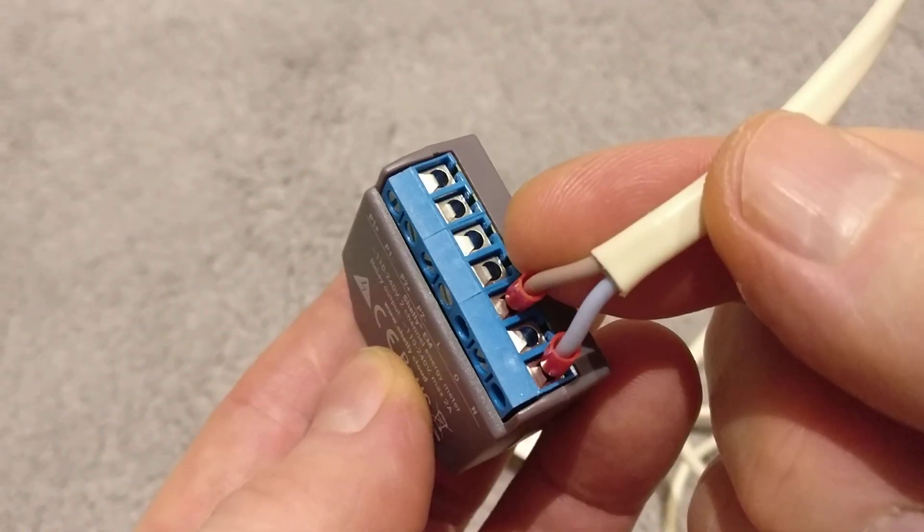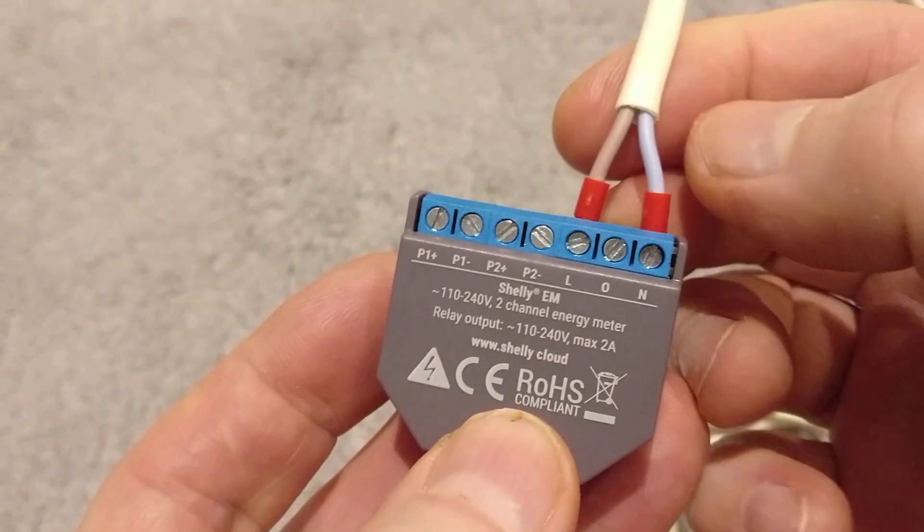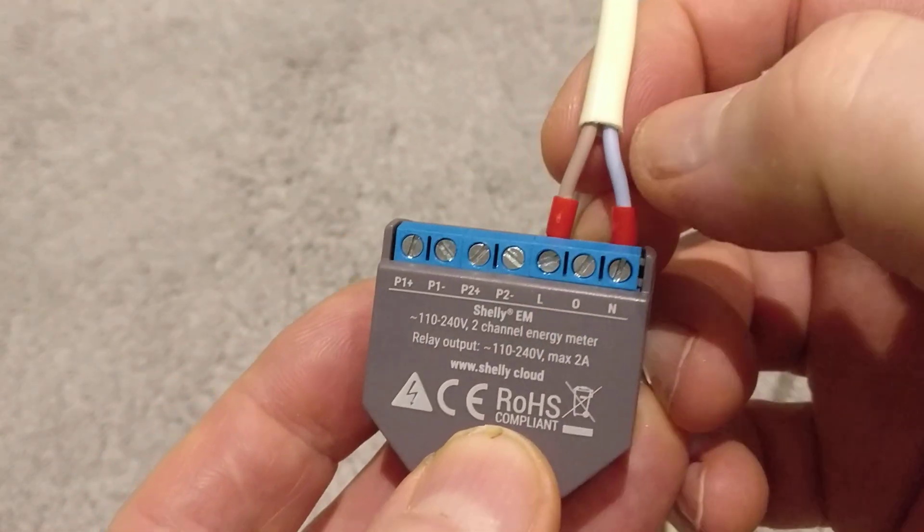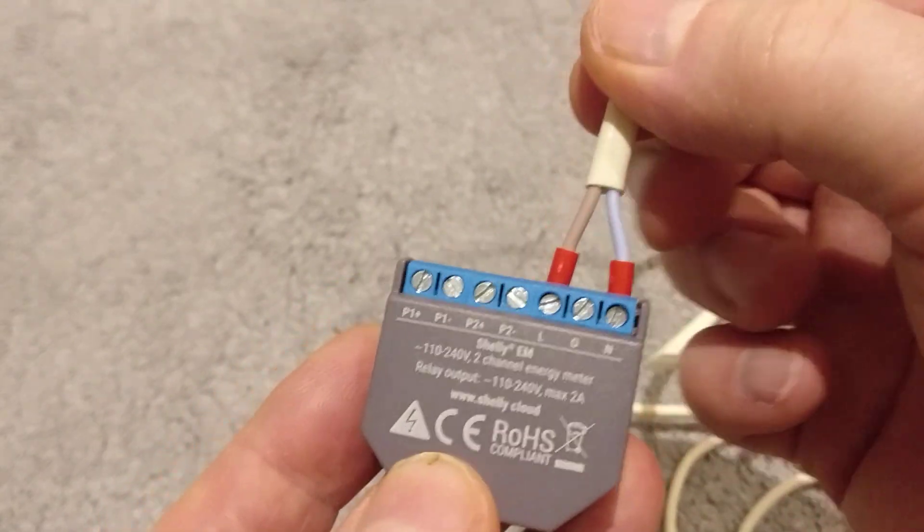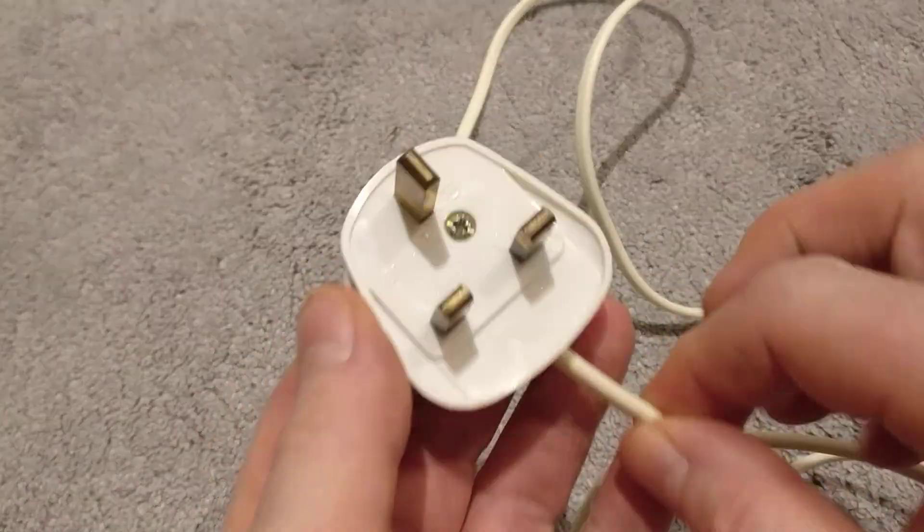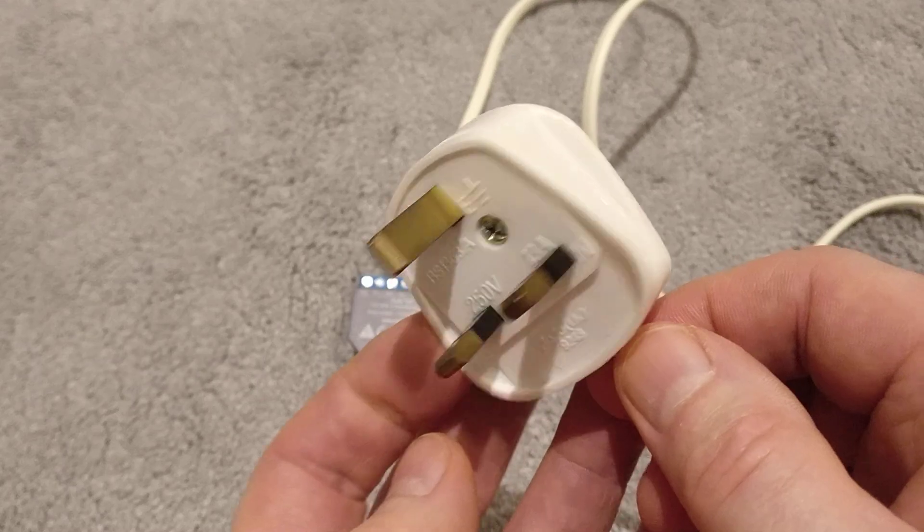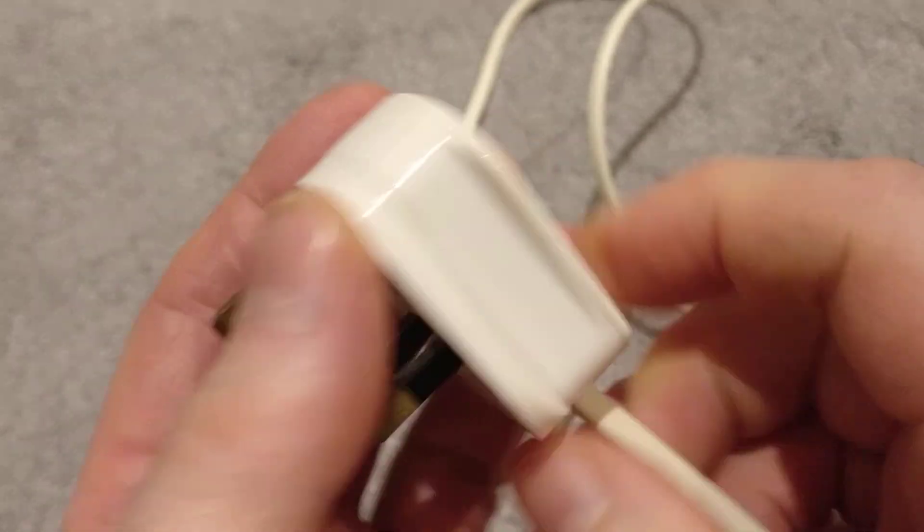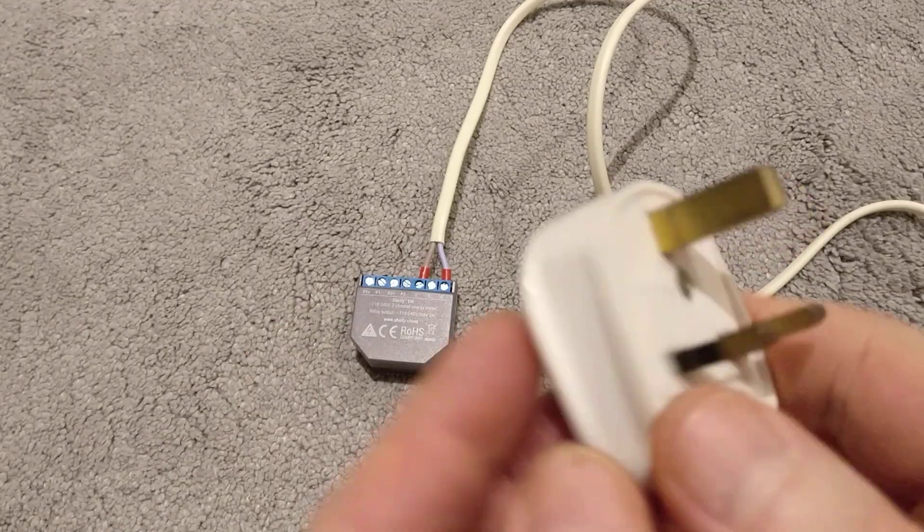I've connected them with a couple of ferrules so you've got a nice neat connection. I'm in the UK, so brown is live and blue is neutral. They're connected nice and firmly. I'm going to connect mine to a UK 13 amp socket, although I've changed the fusing here to a 2 amp rating. The Shelly doesn't take much power, so that should be fine.